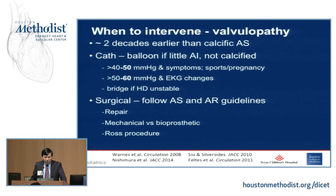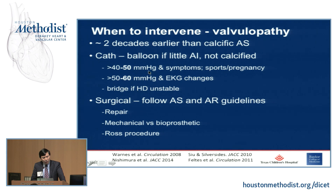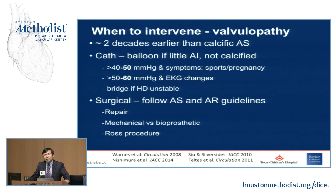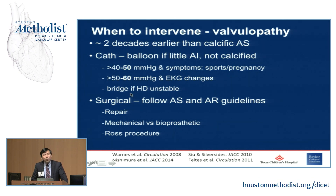When thinking about intervening, it's typically two decades earlier than tricuspid valves in the adult congenital population, especially once calcification begins. The 2011 interventional guidelines suggest intervening at 40 to 50 mmHg with symptoms, or if the patient wants to compete in sports or is considering pregnancy. With EKG changes we might extend to 50 to 60 mmHg. Balloon valvuloplasty can also serve as a bridge if the patient is hemodynamically unstable before surgical or transcatheter aortic valve replacement.